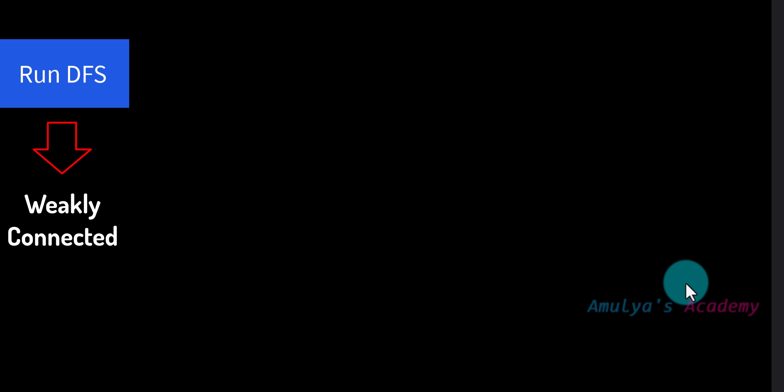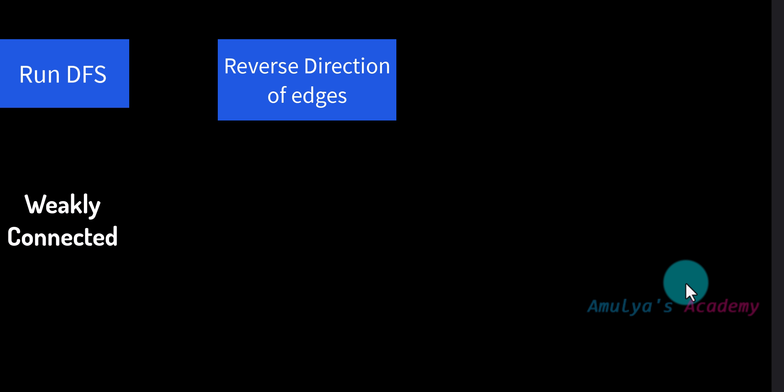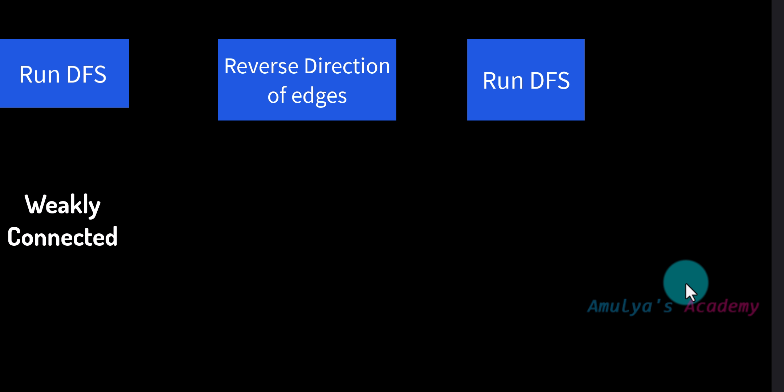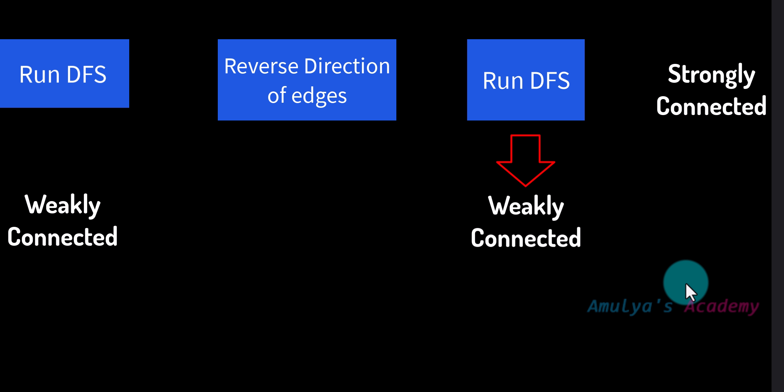To summarize the steps: first, run the DFS function on the given graph. If all nodes are not visited, that is a weakly connected graph and we are done. If all nodes are present in the visited set, go to the second step — reverse the direction of all edges and run the DFS function again with the same starting node. If all nodes are present in the visited set again, that is a strongly connected graph; if not, it is a weakly connected graph. This is the algorithm, and in the next tutorial we will write the program.